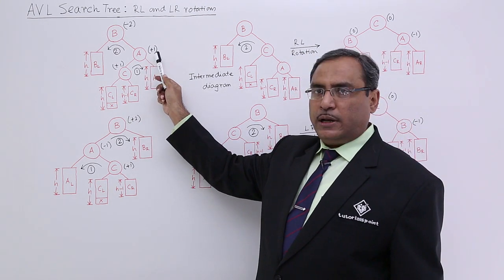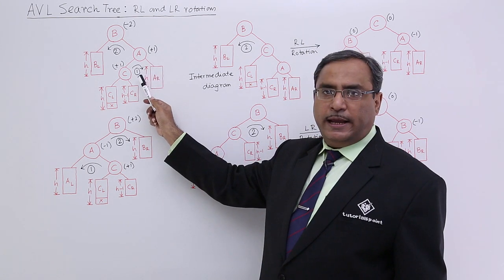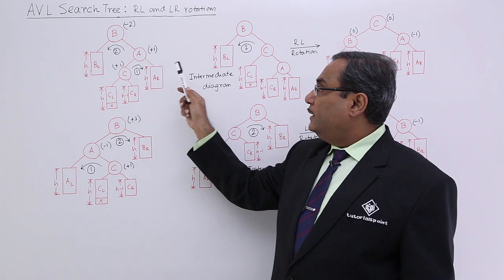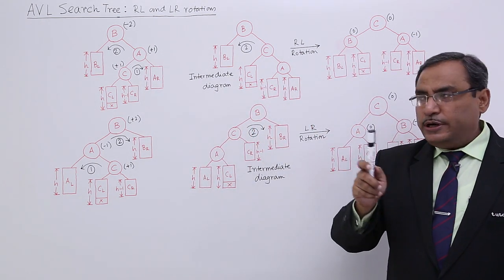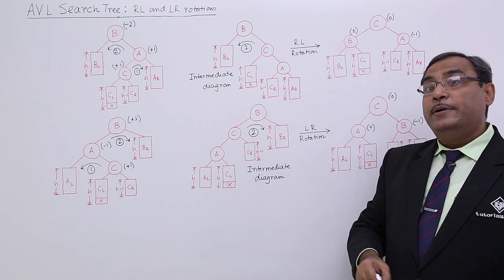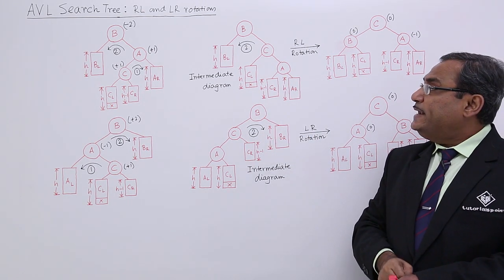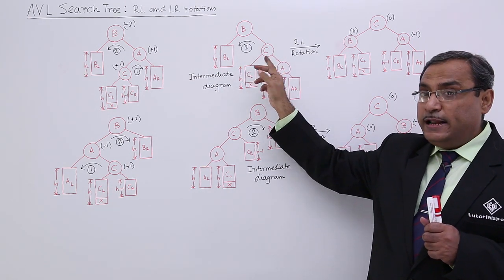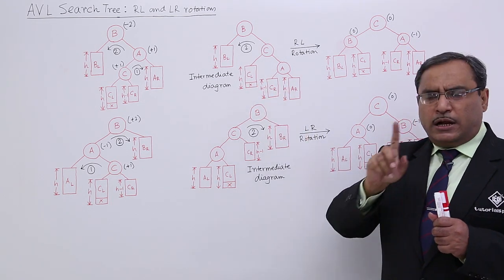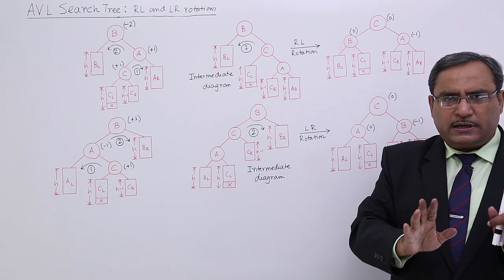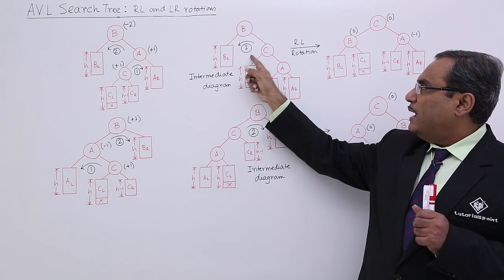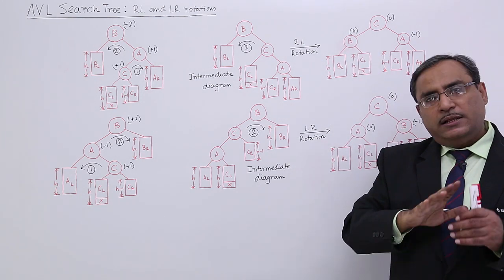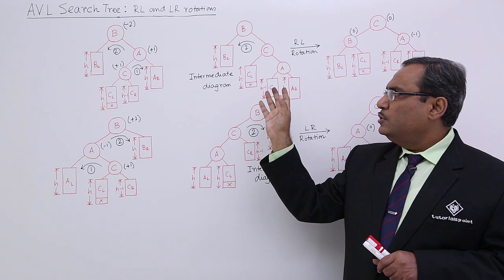Double rotation means: I know it is plus 1, I know this one it is plus 1. Here I am not expecting any rotation but I should give a rotation like this. After the first rotation the tree will take an intermediate shape. Please do not calculate any balance factor for this intermediate diagram because rotation number 2 will remain pending. This rotation will be applied and then I shall get this diagram, and there if I check the balance factors they will be balanced.